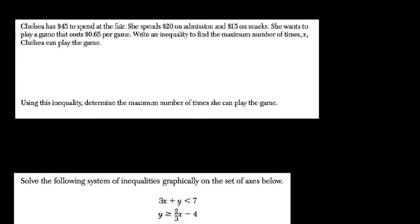Chelsea has $45 to spend at the fair. So she has $45, and this is a common kind of problem. We know right now whatever she spends can't exceed this. It has to be less than or equal to that.